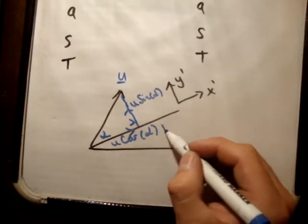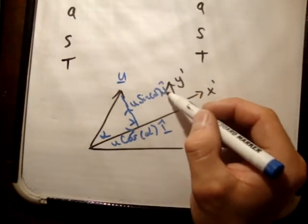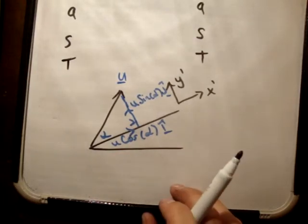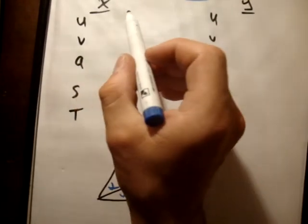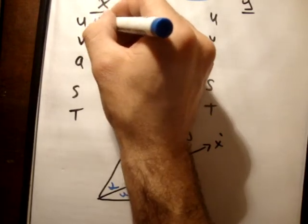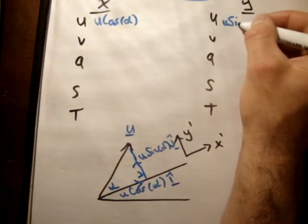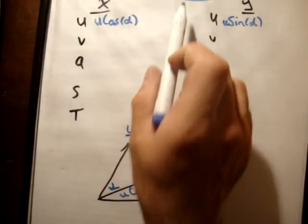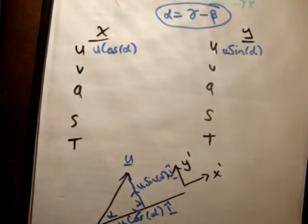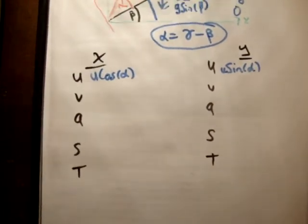So it's u cos alpha i-hat, and u sine alpha j-hat. Both of those are positive. All right? So let's write that in up here. Here, u. Of course, you could put in alpha is equal to gamma minus beta as well. That's equivalent. That's the exact same thing.